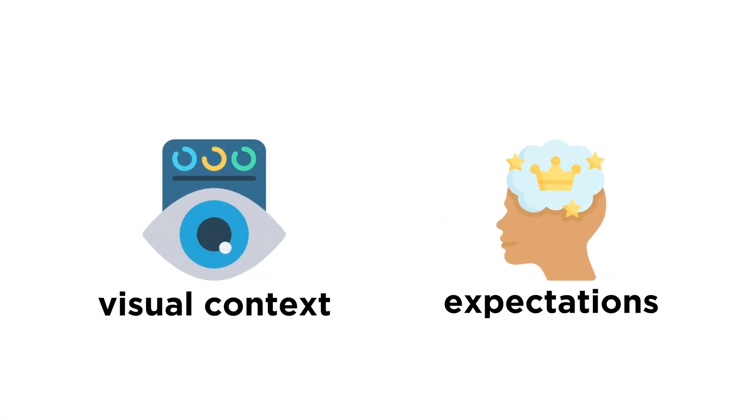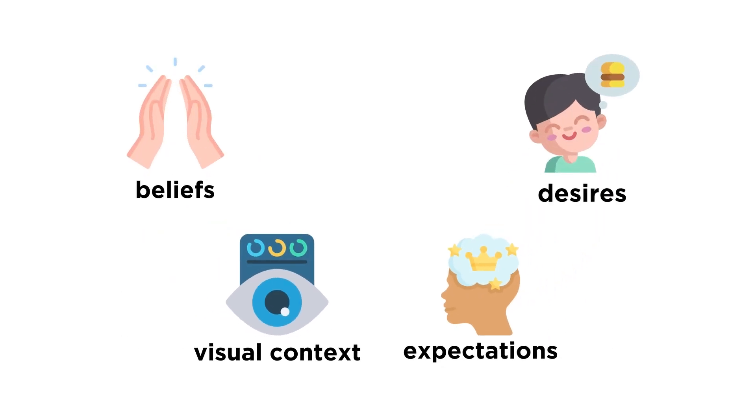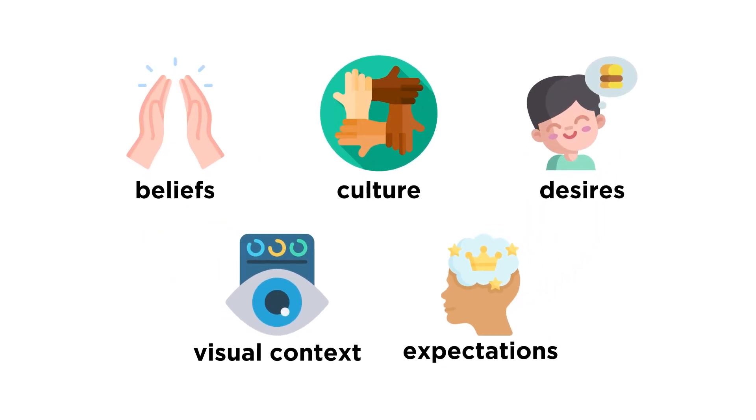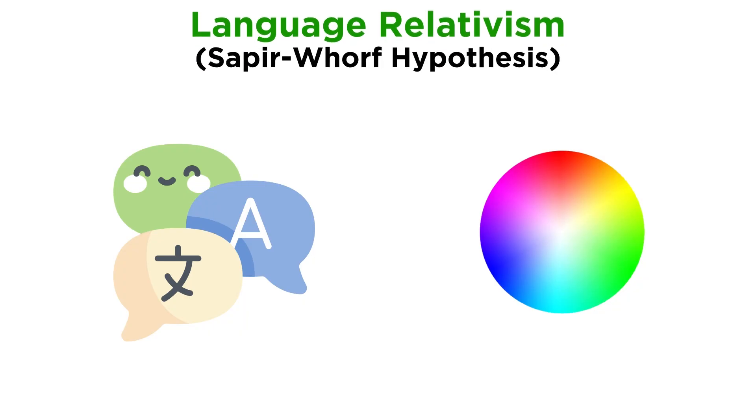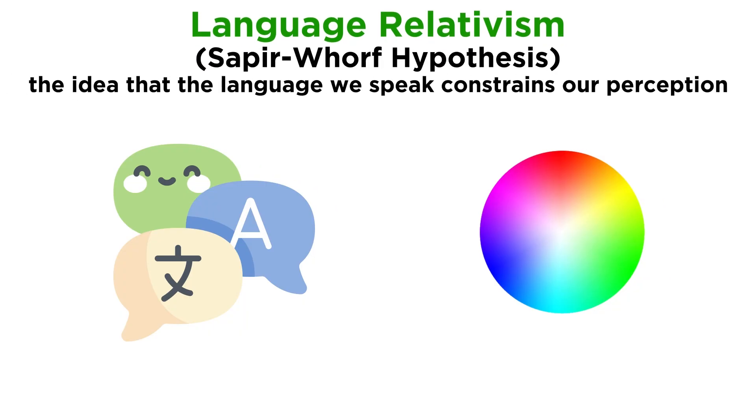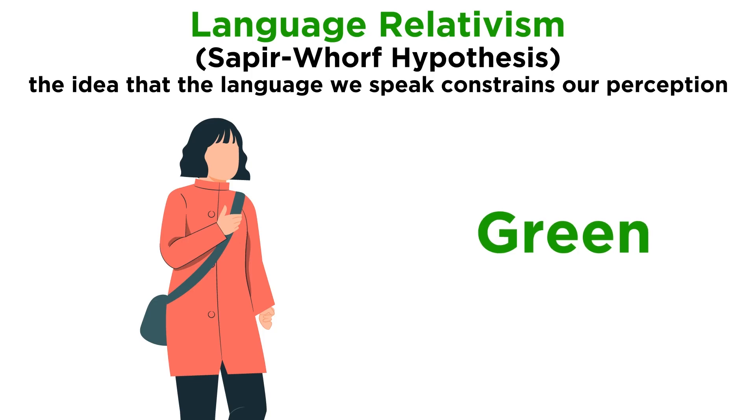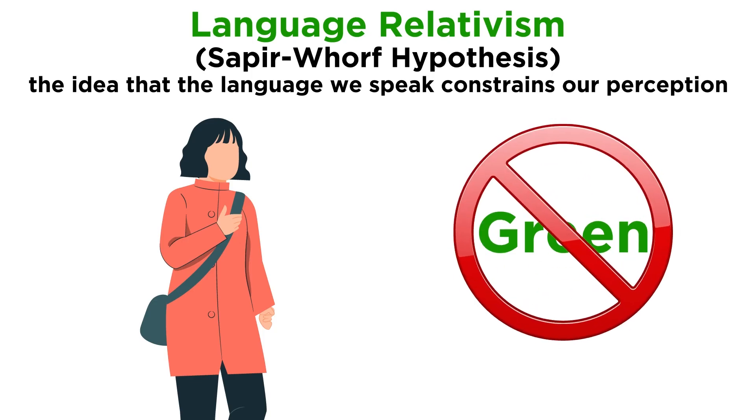In addition to being affected by visual context and expectations, our perception of things can actually be affected by our beliefs, desires, and even culture. Language, for example, can impact how we see colors. Language relativism, also known as the Sapir-Whorf hypothesis, is the idea that the language we speak constrains our perception and cognition. So if your language doesn't have a word for the color green, you don't see the color green.